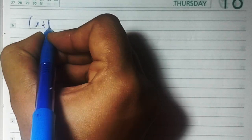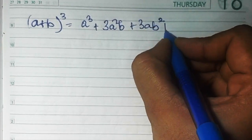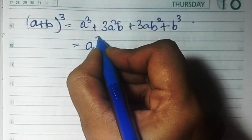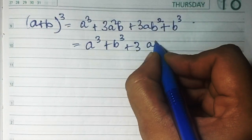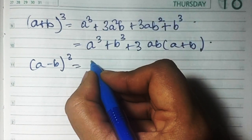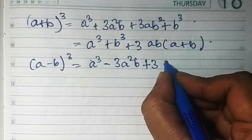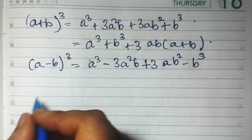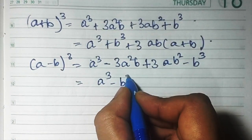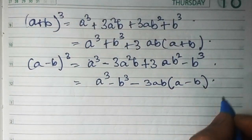Now we'll do the expansion of the formula (a+b)³. The formula expansion is a³ + 3a²b + 3ab² + b³. You can also write it as a³ + b³ + 3ab(a+b). And (a-b)³ formula is a³ - 3a²b + 3ab² - b³. You can also write it as a³ - b³ - 3ab(a-b). You can use any one of these two forms.